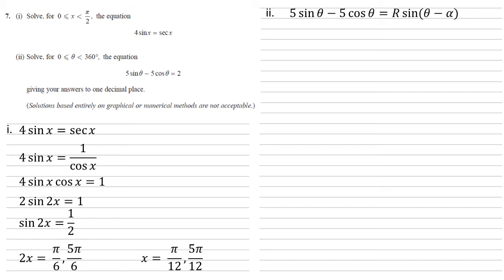So to do this, we know that r is equal to the square root of the squares of the two coefficients. So square root of 5 squared plus 5 squared equals square root 50.